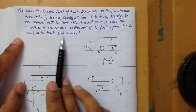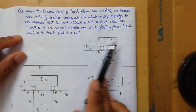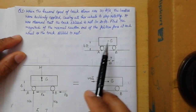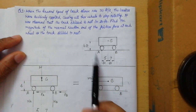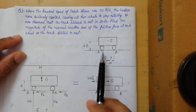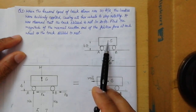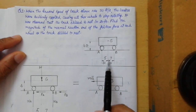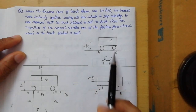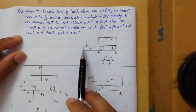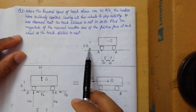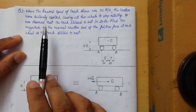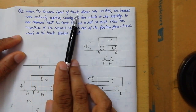The diagram shows a truck with its center of gravity marked. The distance of the rear wheel from the center of gravity is 5 feet, the distance of the front wheel from the center of gravity is 7 feet, and the height of the center of gravity from the surface is 4 feet.